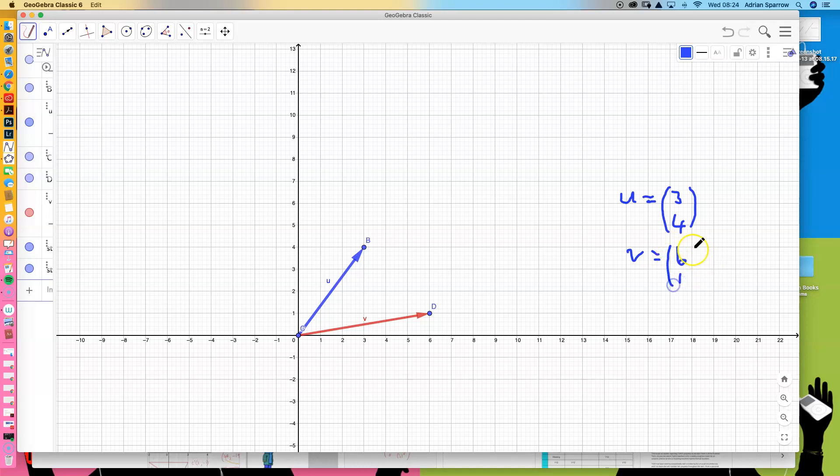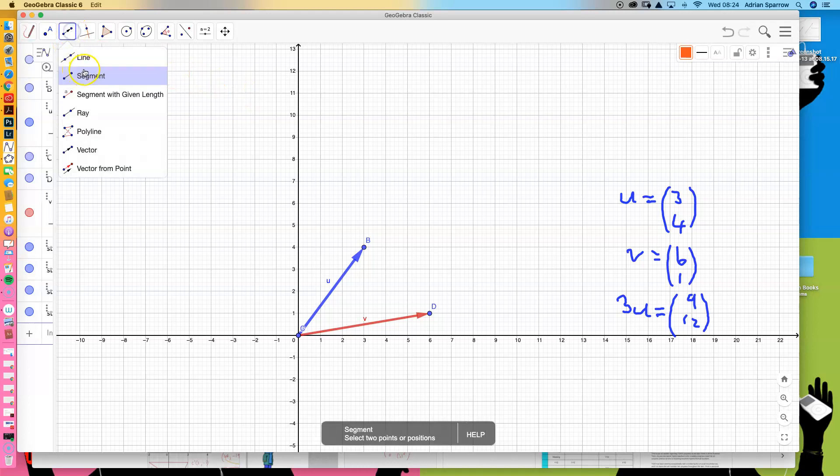Now a very simple thing we can do is multiply u by a number such as 3. If we multiply it by 3, as you might expect, this goes to (9, 12) and gives us a new vector. We're going to draw that new vector at (9, 12) and have a look at what happens.